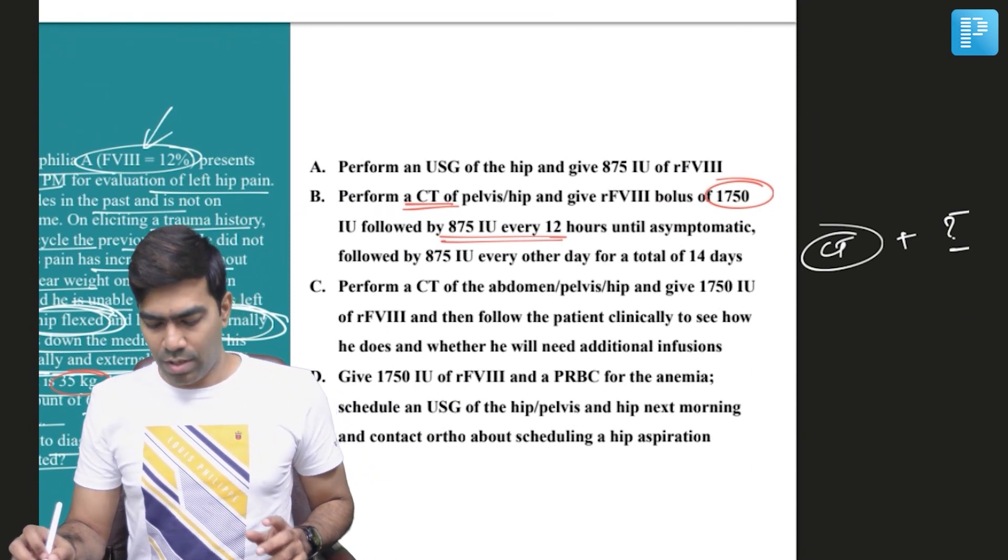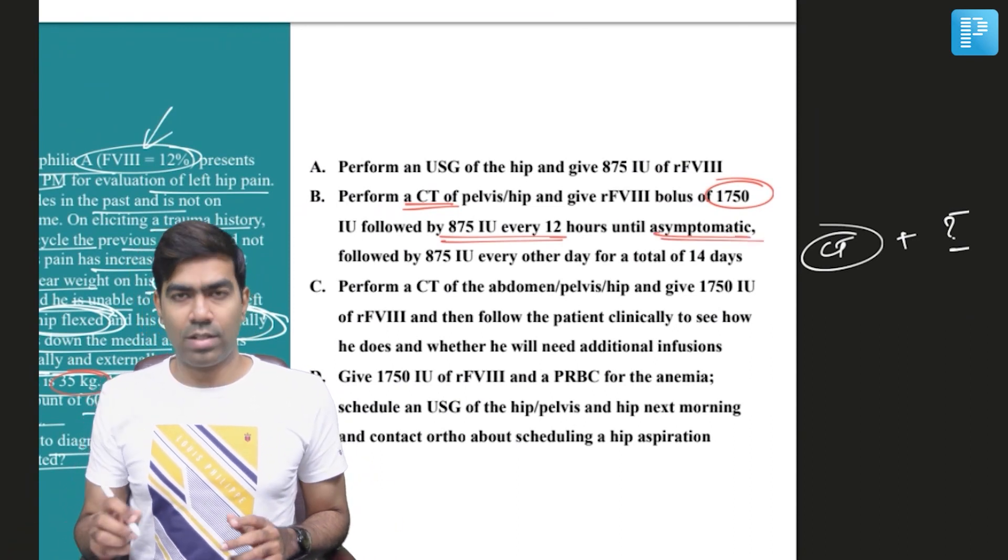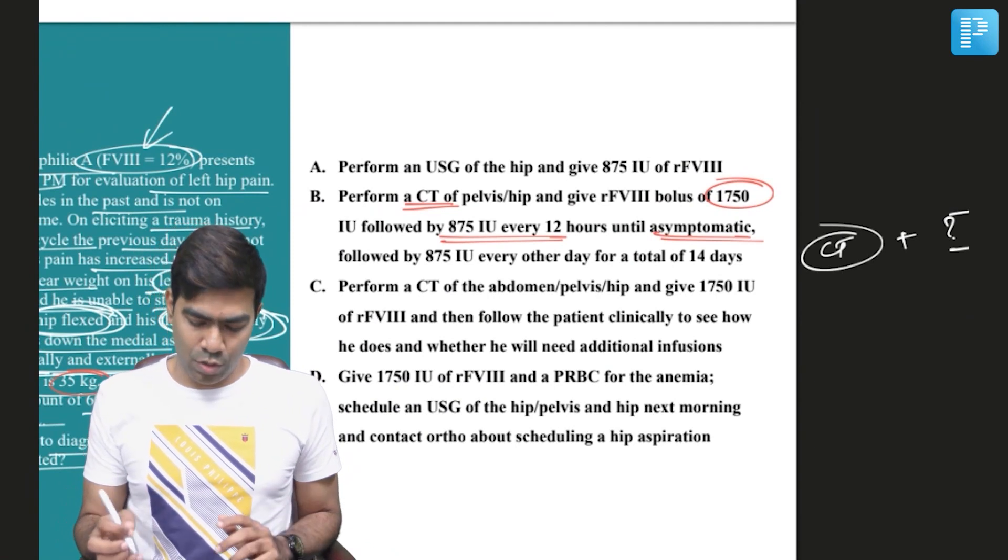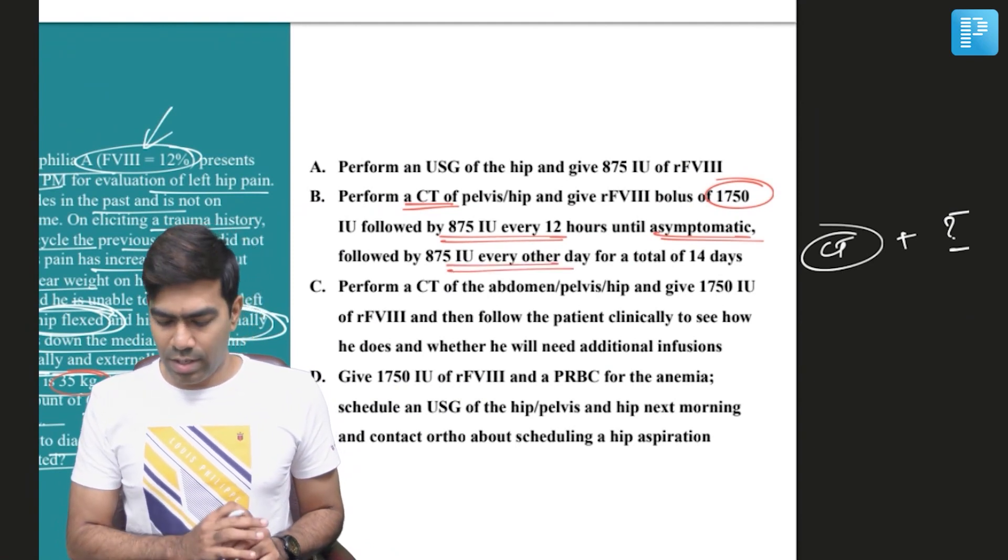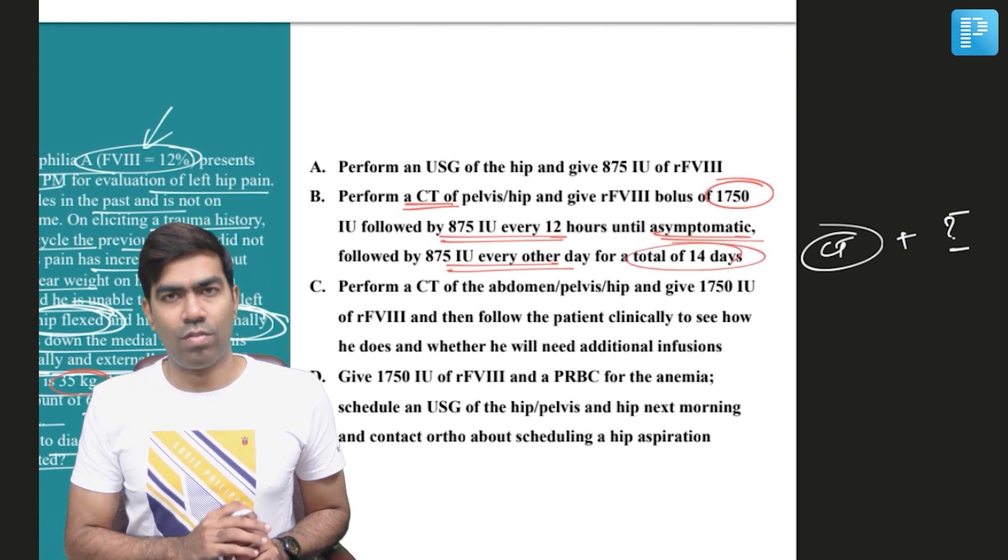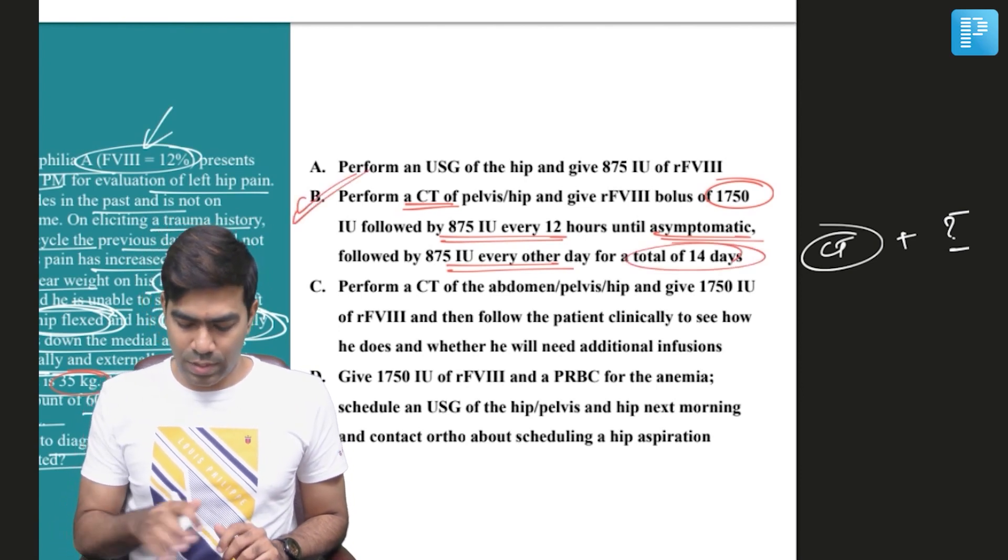And then it will be followed by half the dose, that is 875 units 12th hourly, until the patient is asymptomatic or bleeding stops, then followed by 875 units every 48 hours for a total of 14 days. That will be the right answer for this question.